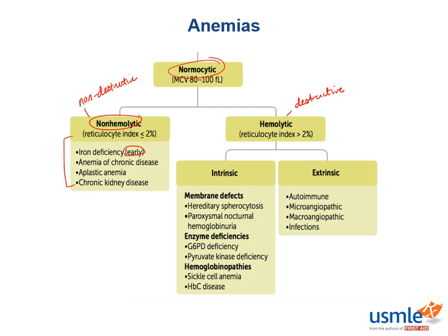Then on the other end of the spectrum, we have hemolytic normocytic anemias — disorders that result in red blood cell destruction. These can be further categorized as intrinsic, meaning something fundamentally within the red blood cell — either structurally or functionally — causes it to break, or extrinsic, meaning something outside the red blood cell causes it to break. Intrinsic disorders include hereditary spherocytosis and paroxysmal nocturnal hemoglobinuria, where the red blood cell has an unusual physical form. There's also glucose-6-phosphate dehydrogenase deficiency or pyruvate kinase deficiency, where defective enzymes cause breakdown, or hemoglobin disorders like sickle cell disease or hemoglobin C disease. All of these are intrinsic hemolytic normocytic anemias with a high reticulocyte index.